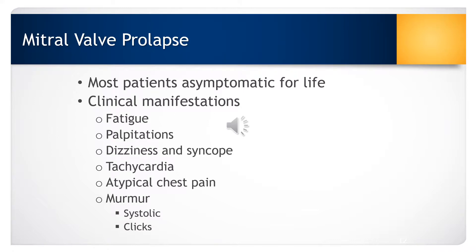Most patients with mitral valve prolapse will remain asymptomatic for life, but others may have the following clinical manifestations: fatigue, heart palpitations, dizziness and syncope, tachycardia, and atypical chest pain. The patient may also have a murmur resulting from regurgitation that is heard more intensely during systole, and there may be one or more clicks heard in mid-systole to late-systole.